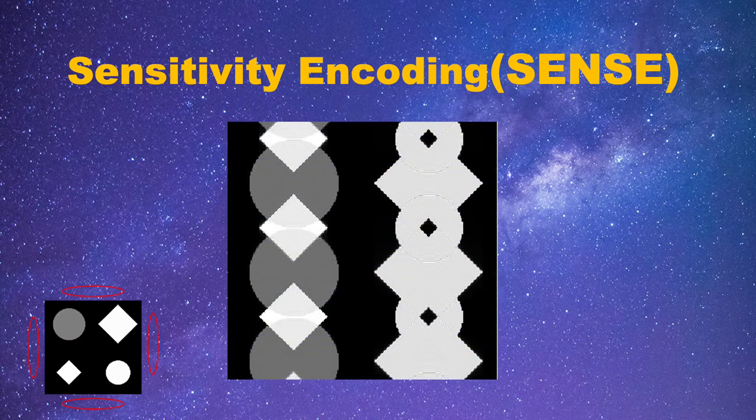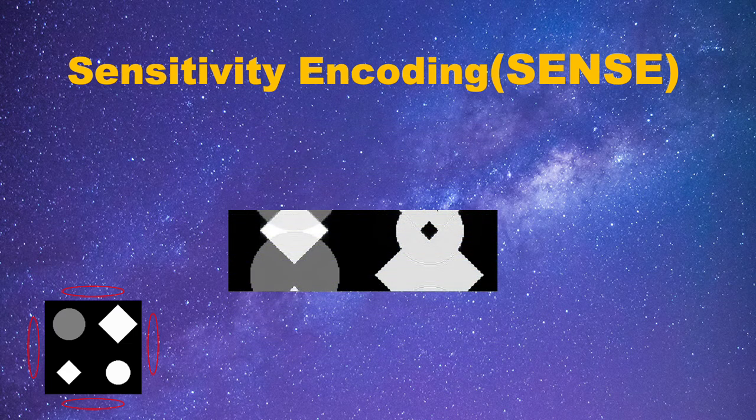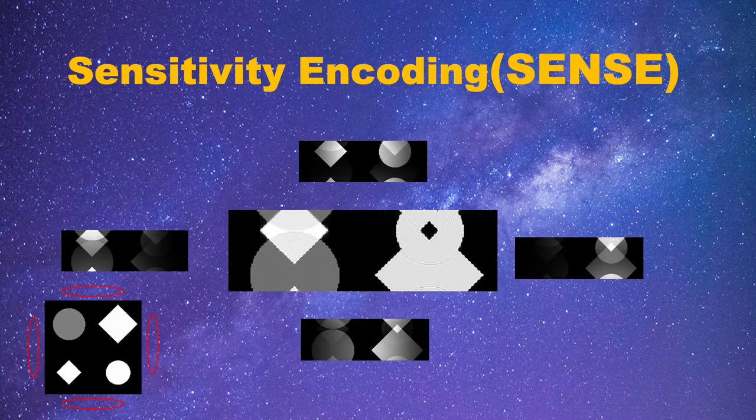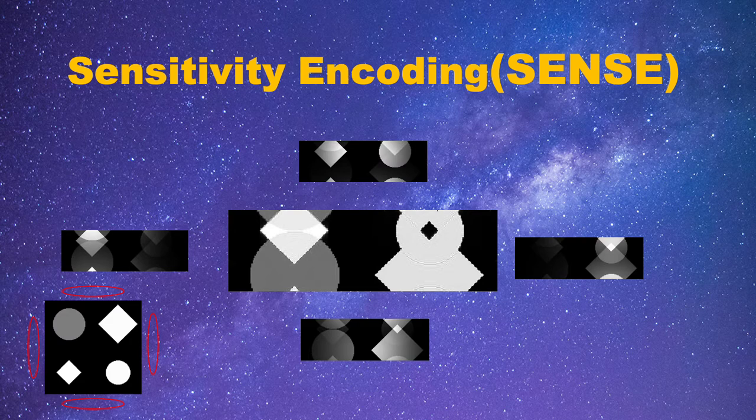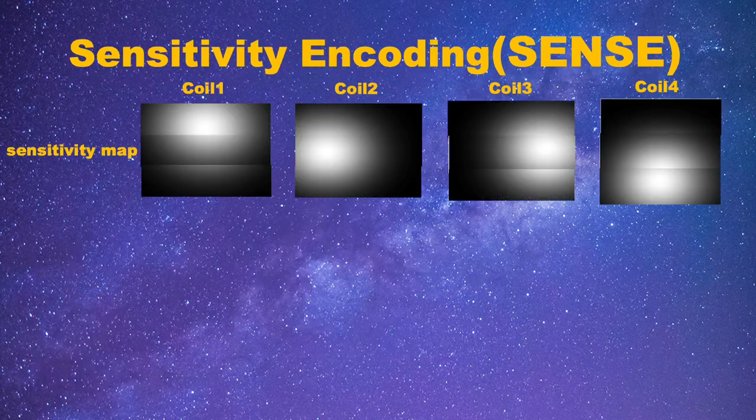Now let's look again at this aliased image. If we only take the center of the image, we can see it actually contains all the parts of the object, though they are overlapped with each other. Notice, even in the aliased image, it still contains the sensitivity information from the whole field. So, we can just use the center part of the image in the reconstruction.